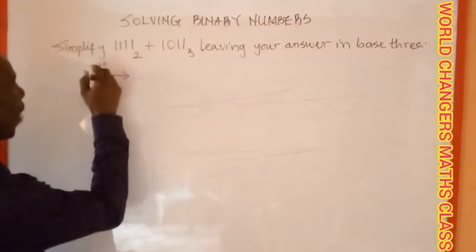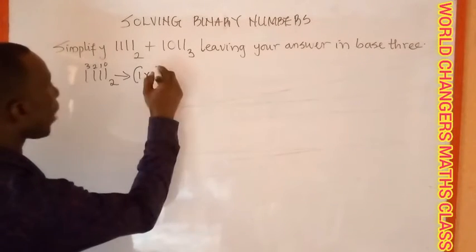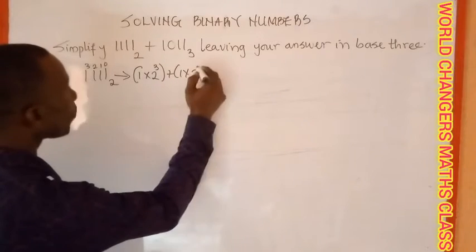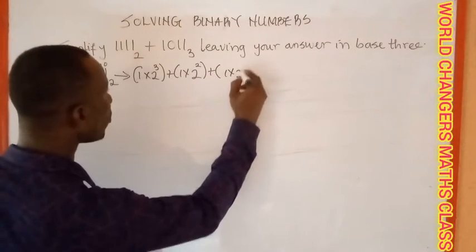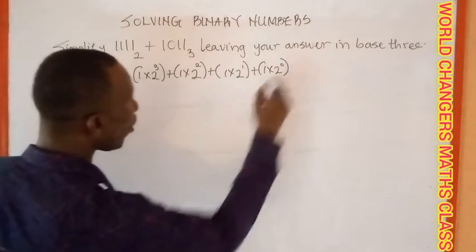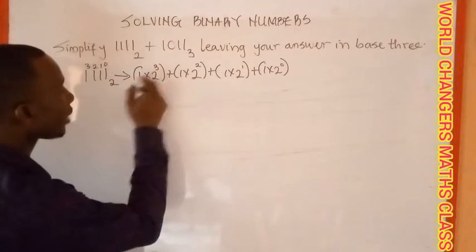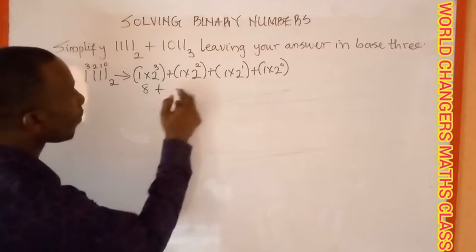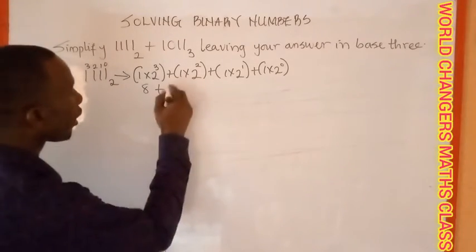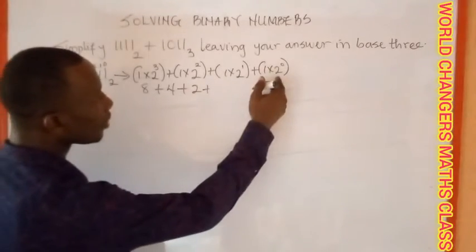We label the positions zero, one, two, three. We say: one times two raised to power three, plus one times two raised to power two, plus one times two raised to power one, plus one times two raised to power zero. Two raised to power three is eight, eight times one gives me eight. Plus two raised to power two is four, four times one gives me four. Plus two raised to power one is two, times one gives me two.